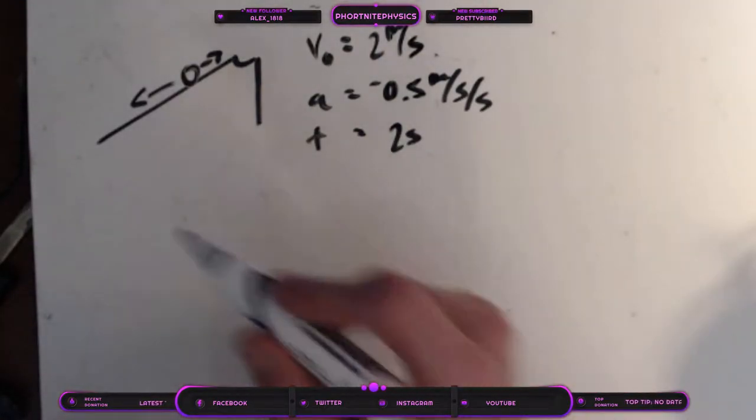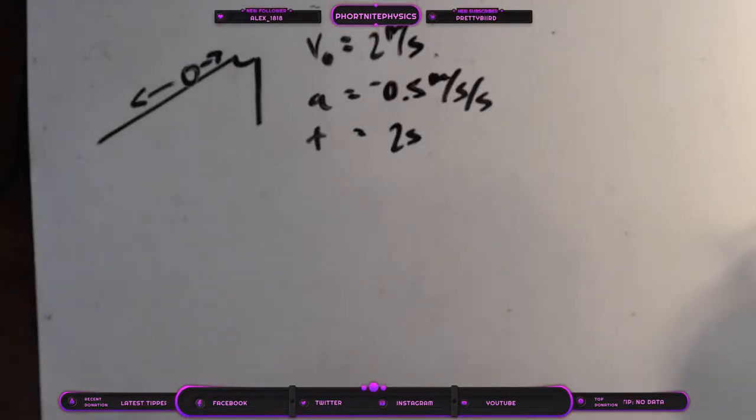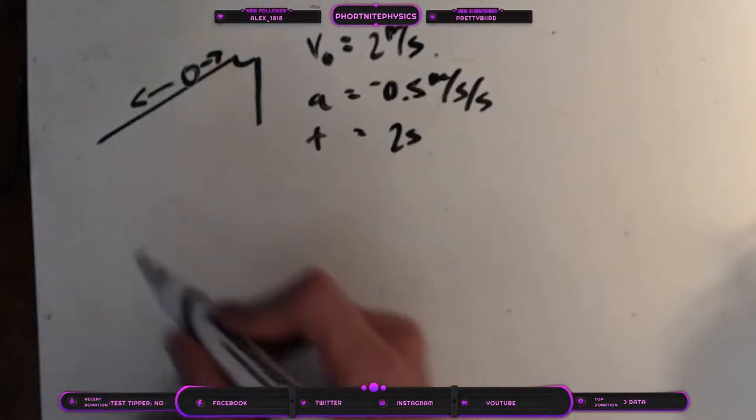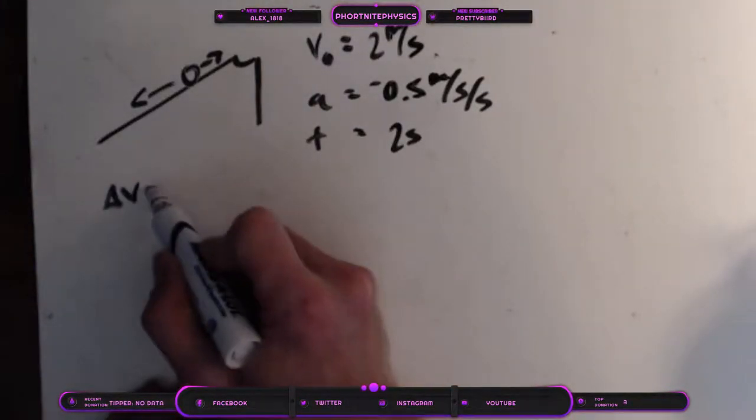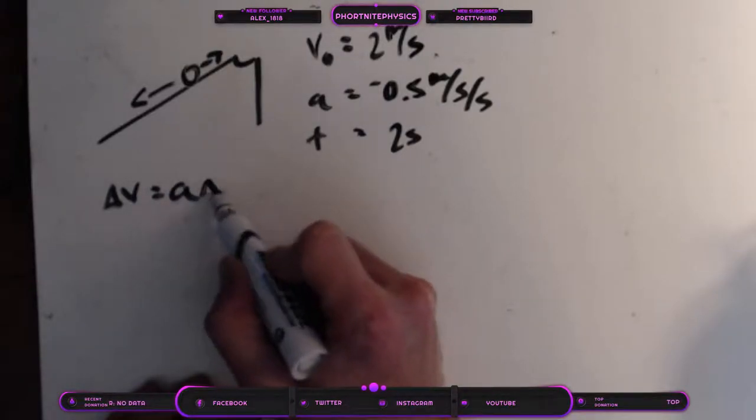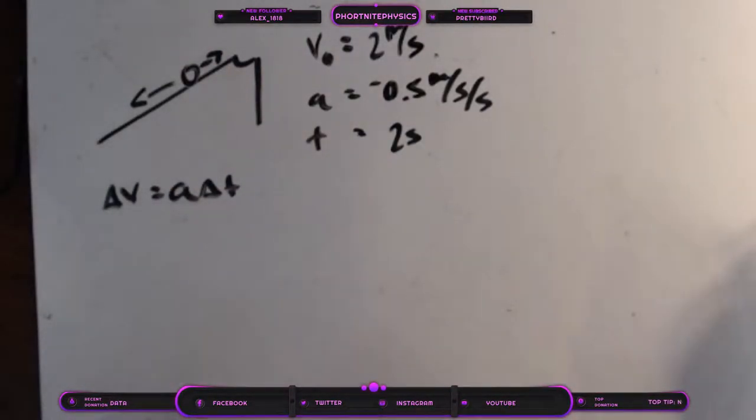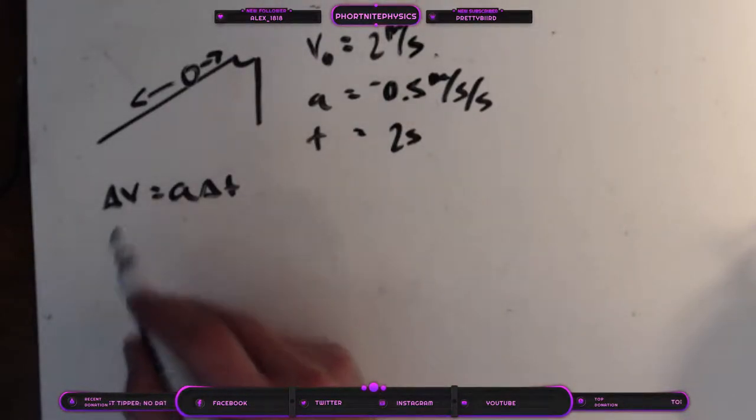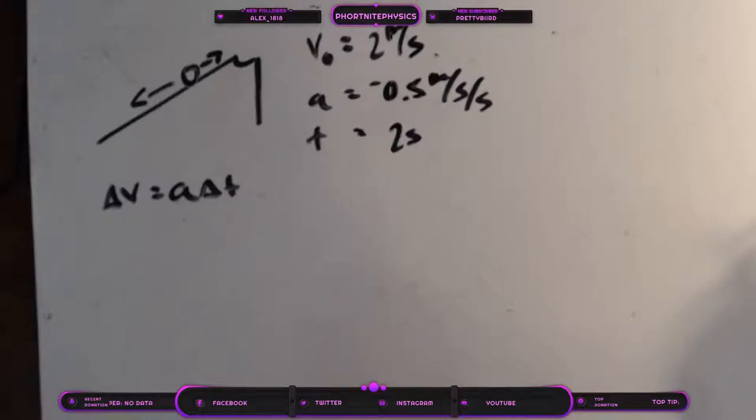So our equation that would apply to this particular situation is as follows. We have a change in velocity, which is equal to our acceleration multiplied by our change in time: ΔV = aΔt. We've been given velocity, acceleration, and time. But let's take a look at this delta V and see what it means.